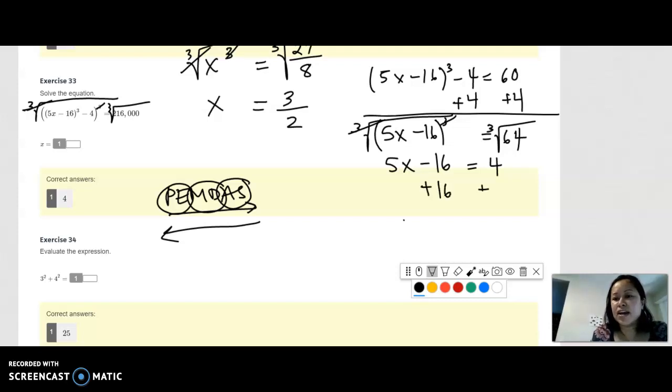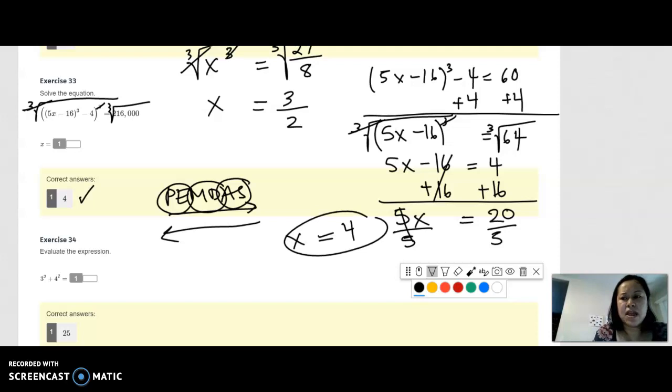Because we want to undo the addition subtraction first before undoing multiplication. And finally we're going to divide by 5 on both sides to get x equals 4. Awesome, we got it! The other problems I think you should be able to figure out. They're simpler and they're review problems. I'm going to leave that there for you.